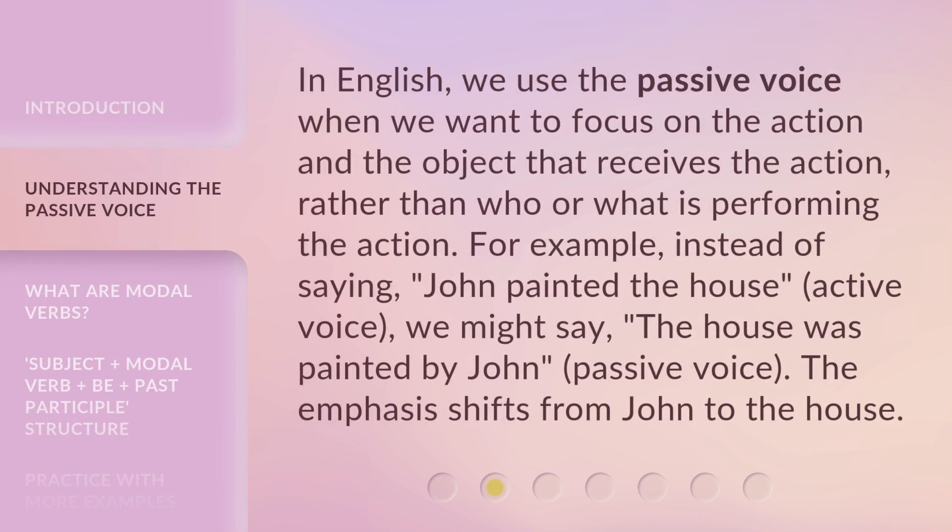In English, we use the passive voice when we want to focus on the action and the object that receives the action, rather than who or what is performing the action. For example, instead of saying 'John painted the house' (active voice), we might say 'The house was painted by John' (passive voice). The emphasis shifts from John to the house.